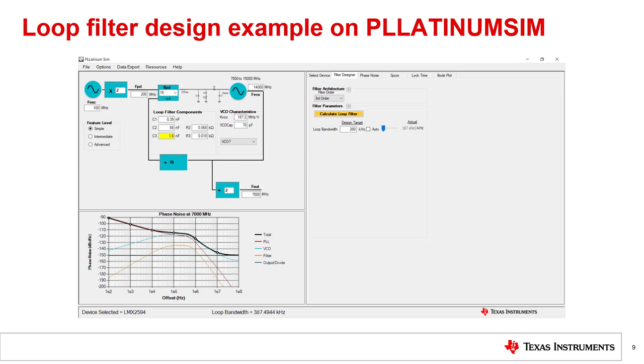Let's step through an example loop filter design. A great way to make designing PLLs easier would be by using a software tool such as TI's PlatinumSim. Instead of going through iterations of extensive calculations, you can use this tool to optimize performance quickly for your clocking needs. At the end of this video, there will be a link to download PlatinumSim from TI.com. Go to the filter designer tab of the PlatinumSim software GUI to modify the loop filter. Changing the feature level gives you access to specify additional parameters and specific details about your desired loop filter. Select the advanced feature level.